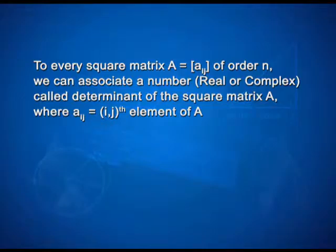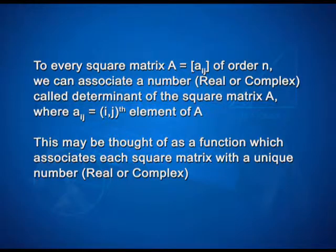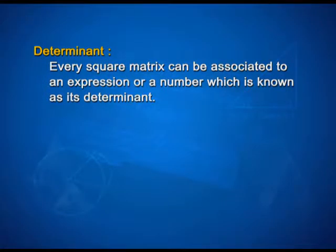To every square matrix A of order n, we can associate a number — real or complex — called the determinant of the square matrix A, where A_ij is the (i,j)th element of A. This may be thought of as a function which associates each square matrix with a unique number, real or complex. So, what is a determinant? Every square matrix can be associated to an expression or a number which is known as its determinant.